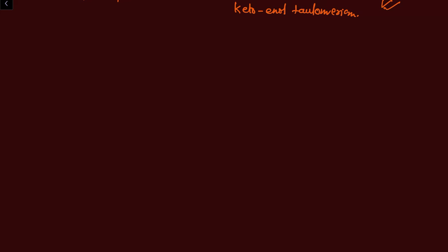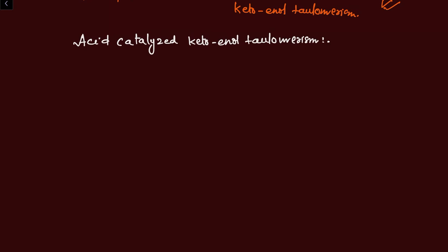From this discussion it is clear that keto-enol tautomerism can be catalyzed in acidic as well as in basic medium. Now let's understand the second fact: why does an equilibrium exist between keto and enol tautomerism? We must understand the mechanism for conversion of keto into enol form and enol into keto form in both acidic and basic medium. We will first understand the acid-catalyzed conversion of keto to enol tautomerism.